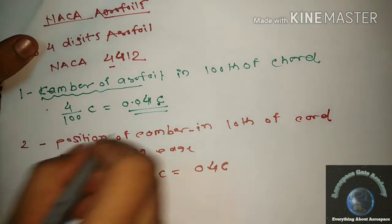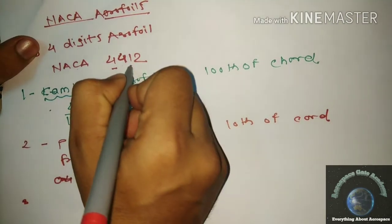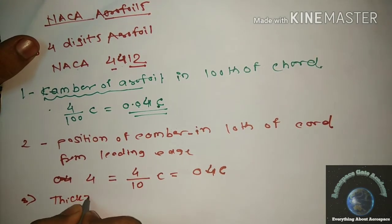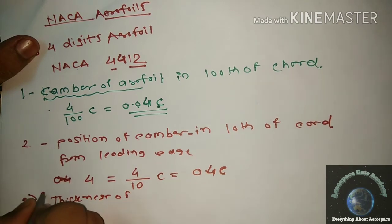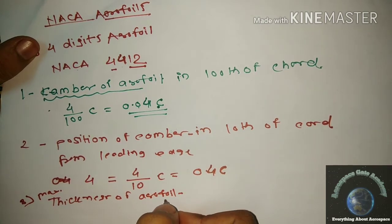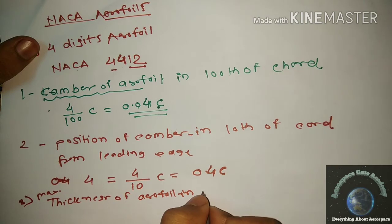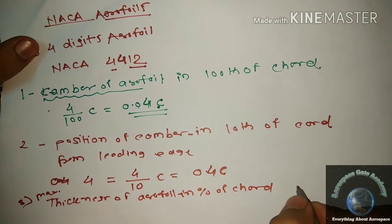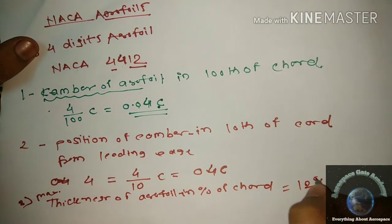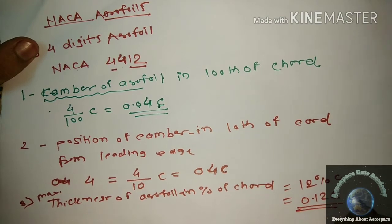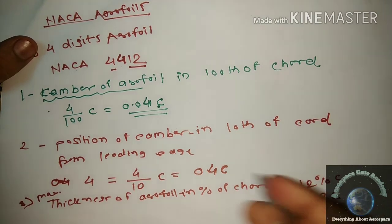The last two digits represent the maximum thickness of the airfoil as a percentage of the chord. In NACA 4412, the last two digits are 12, so the maximum thickness is 12% of the chord, or 0.12C. This covers the four-digit airfoil series.